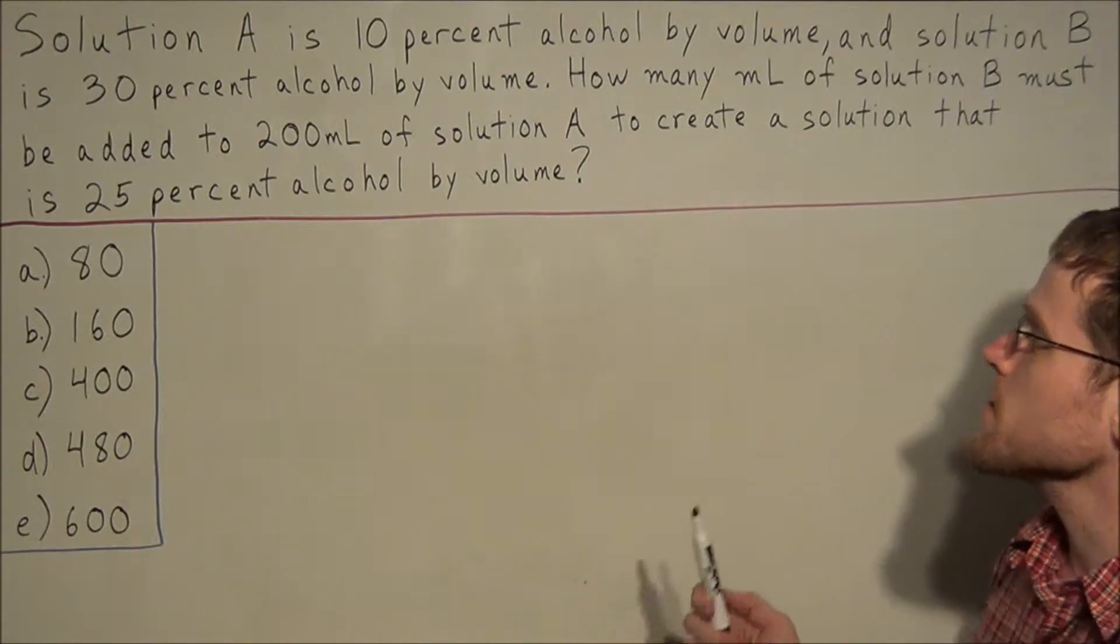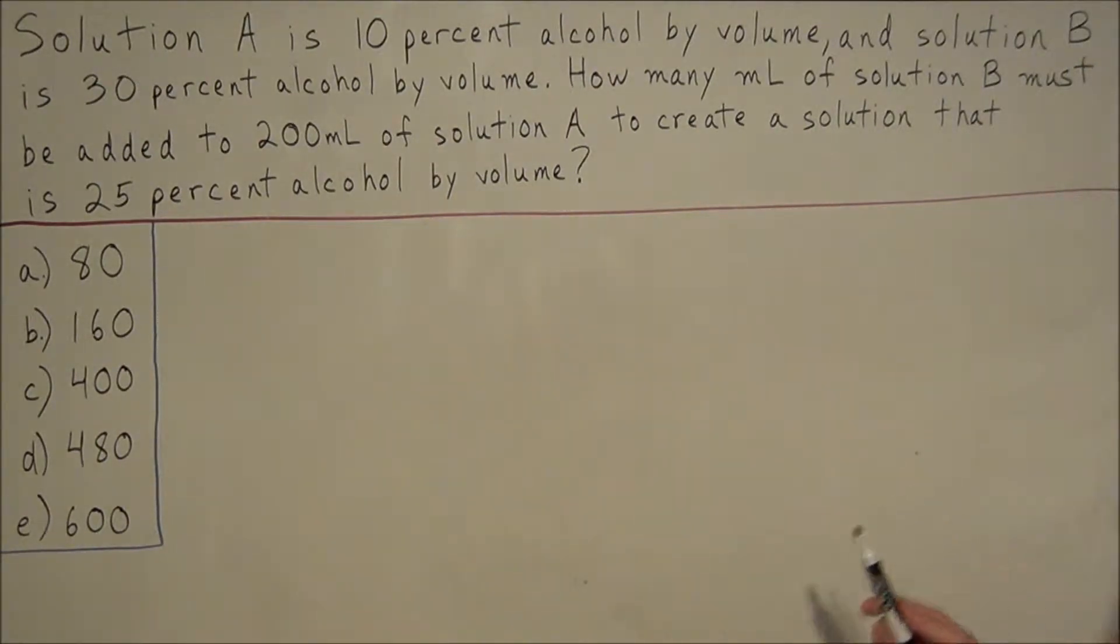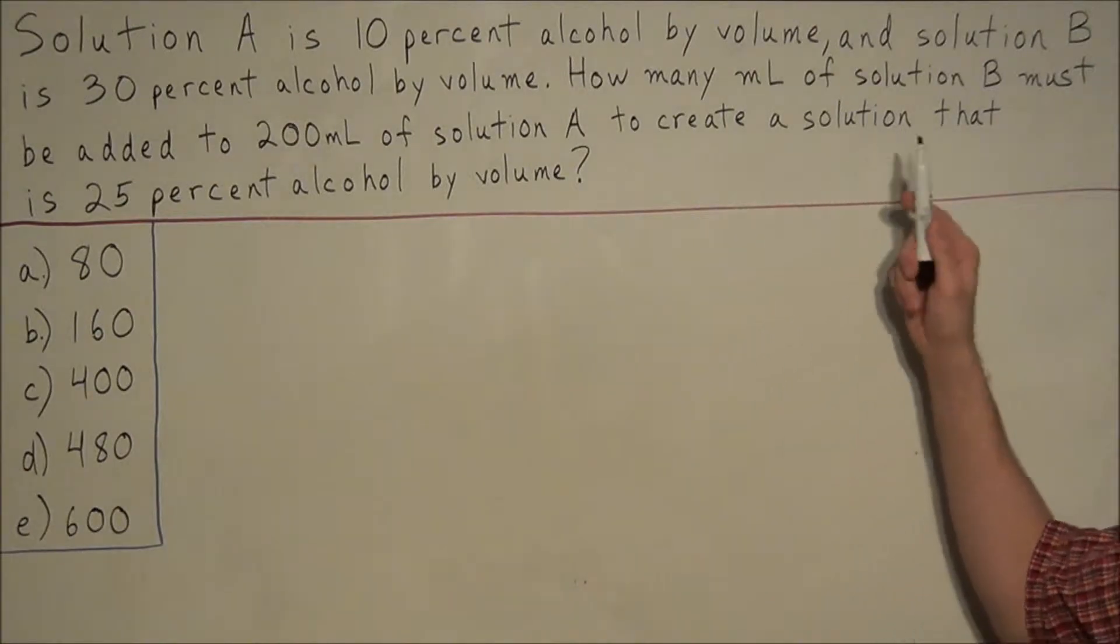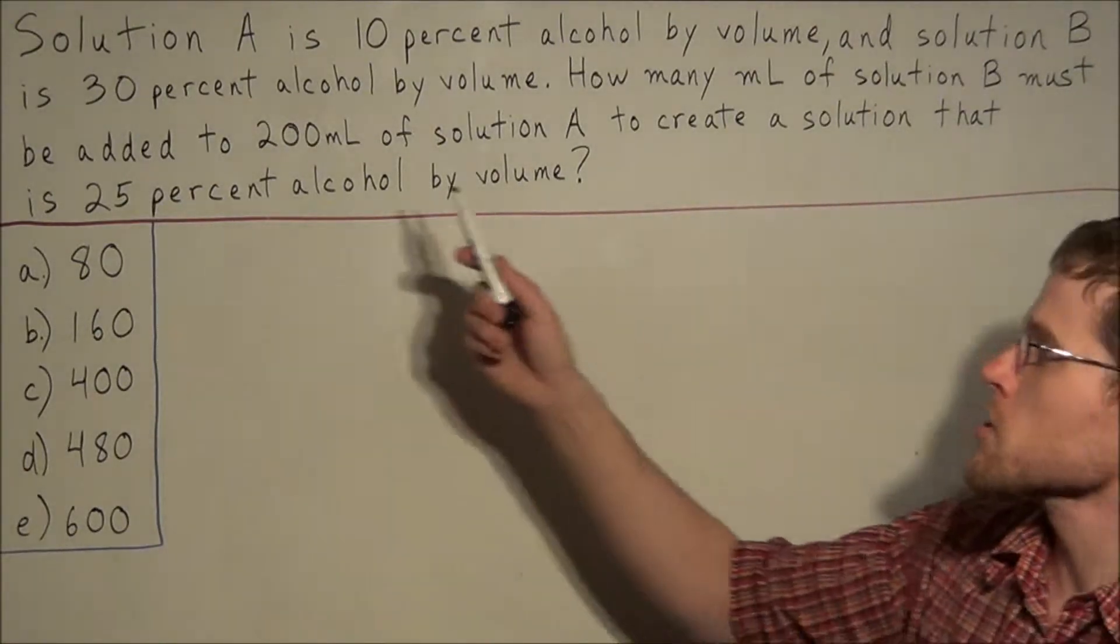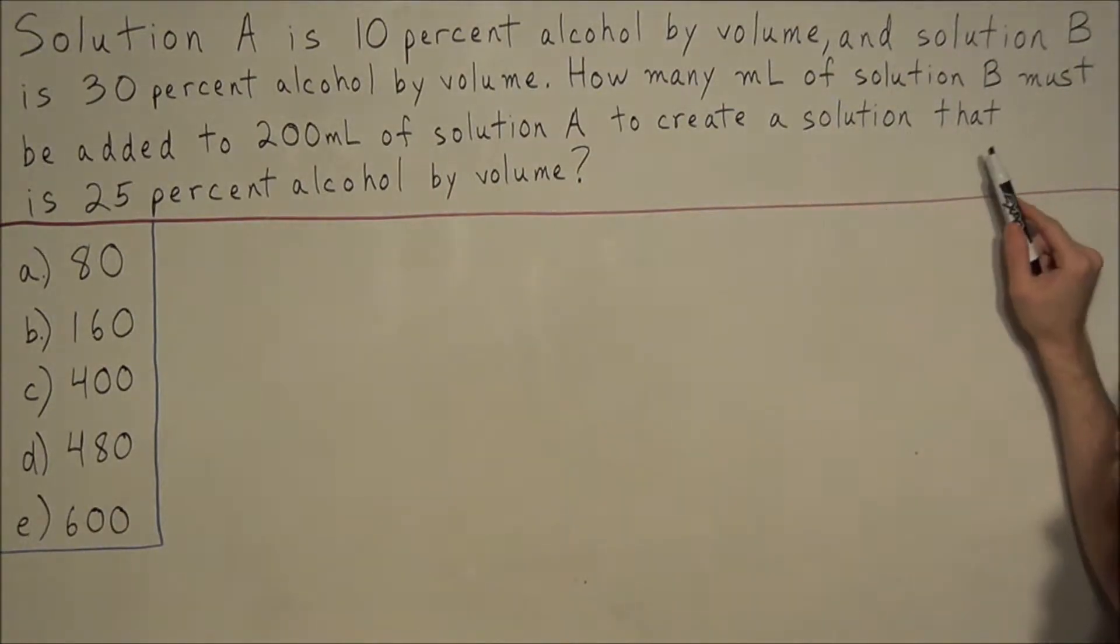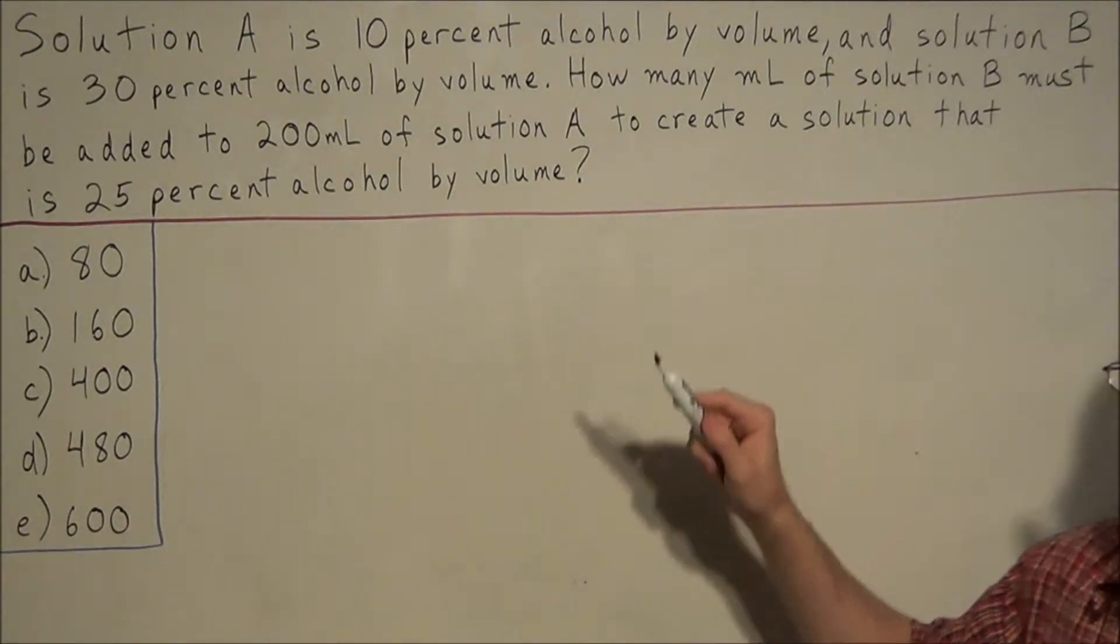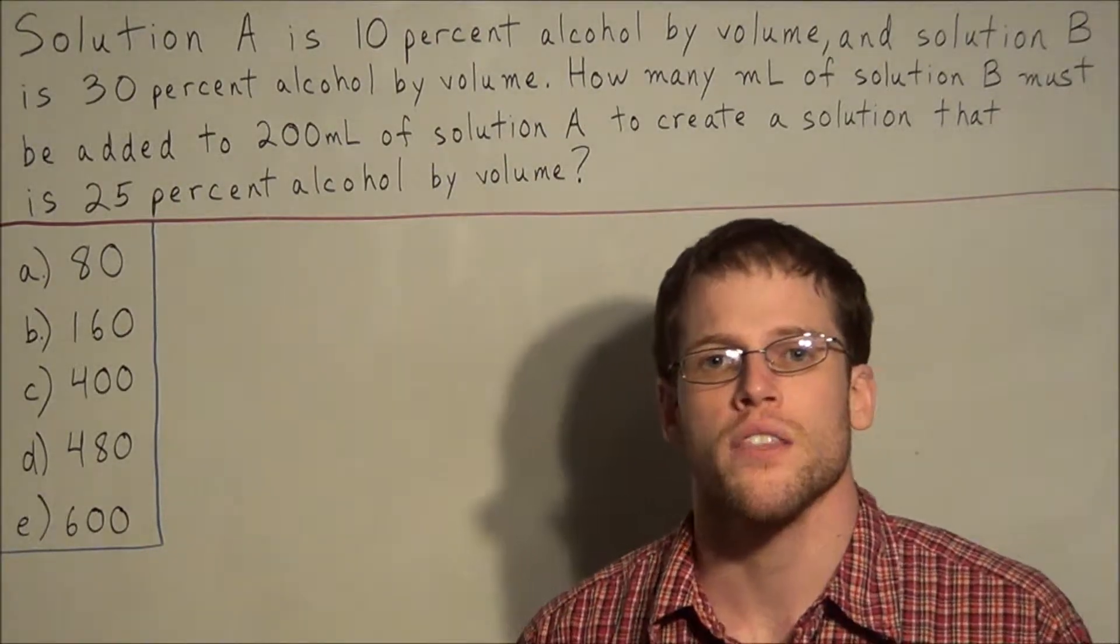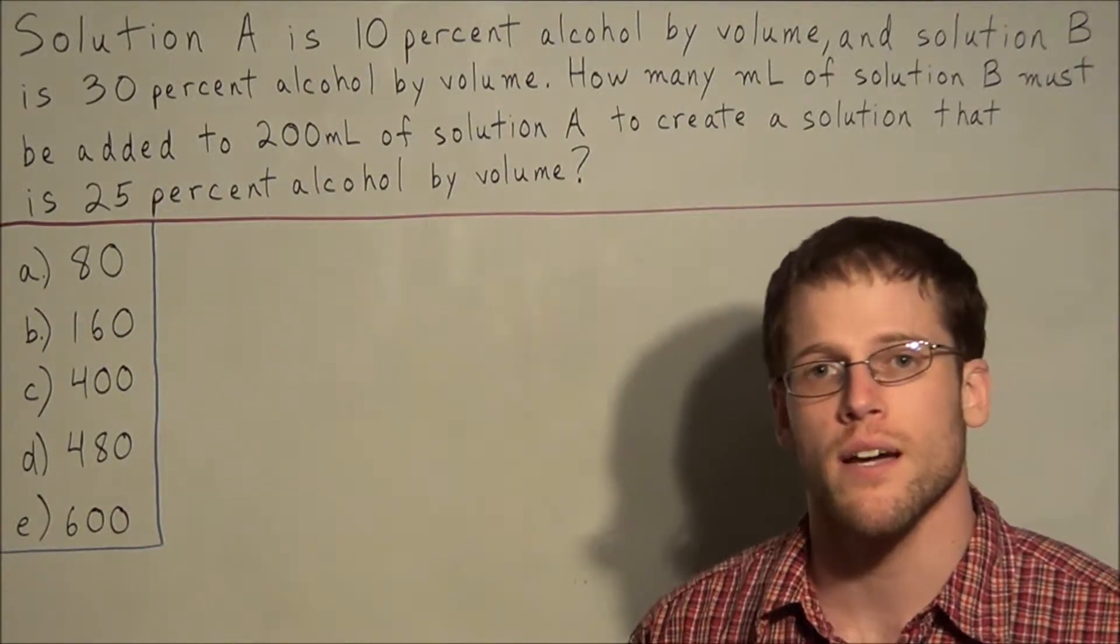We have solution A is 10% alcohol by volume and solution B is 30% alcohol by volume. How many milliliters of solution B must be added to 200 milliliters of solution A to create a solution that is 25% alcohol by volume? For SAT problems the goal is to find the quickest solution because it is a timed test.